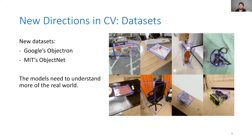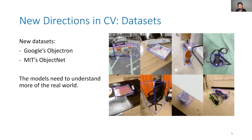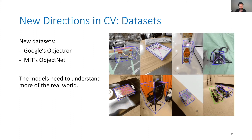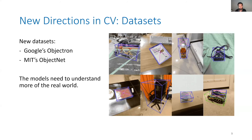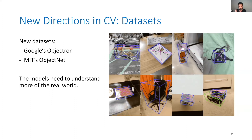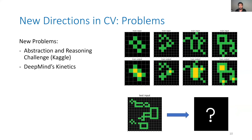So, interesting new directions. First, there are many very interesting datasets available. This one is Objectron — go look it up. It's from Google, published about two months ago. It's a 3D version of ImageNet and much more interesting. The other one is MIT's ObjectNet. So two very interesting datasets — that's one direction. The other direction is about problems: not just detection, but more like reasoning and logic. One very interesting thing is the Kaggle competition called Abstraction and Reasoning. And the other one is DeepMind's Kinetics, also 2020.